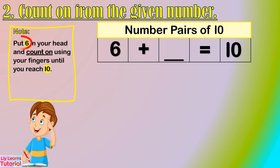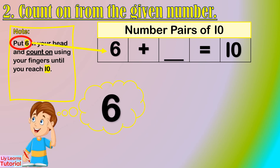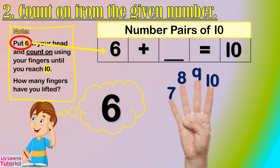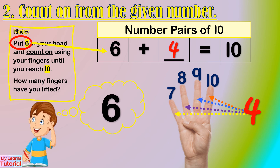Let's start from 6. Hold 6 in your head, then count on: 6, 7, 8, 9, 10. How many fingers have you lifted? 1, 2, 3, 4 — that's 4 fingers. So the number pair of 6 is 4.